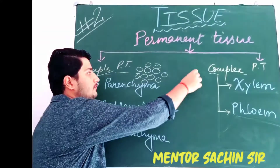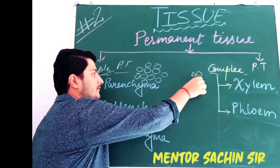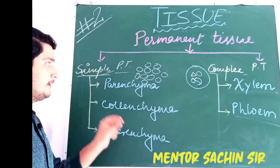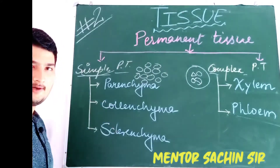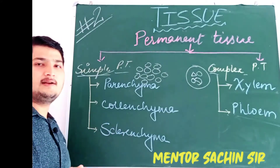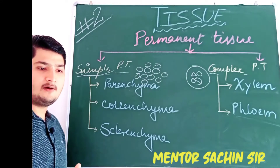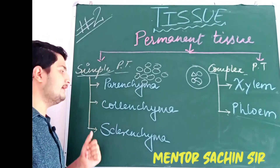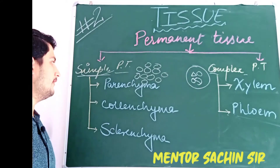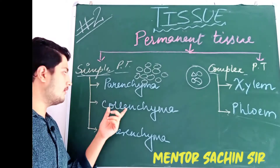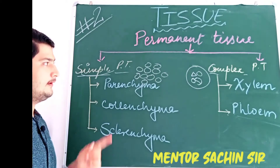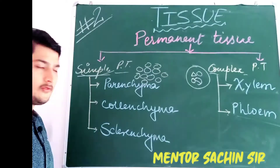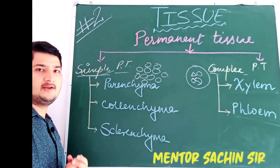In the case of complex permanent tissue, cells may be of different types. This is also a group of cells, but the shape and size of each cell is different. Complex permanent tissue is a type of permanent tissue made up of different types of cells. Simple permanent tissue is further divided into three categories: parenchyma, colenchyma, and sclerenchyma. Complex permanent tissue is divided into two categories: xylem and phloem. We will discuss each of these tissues in detail.